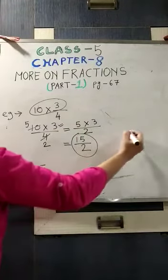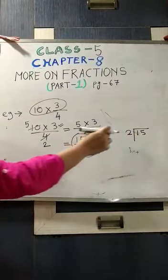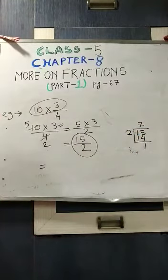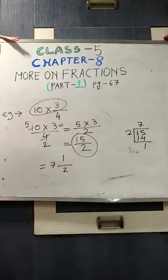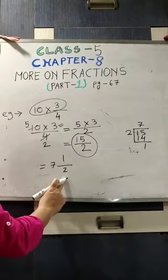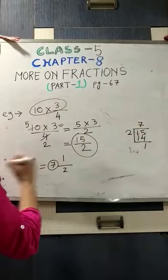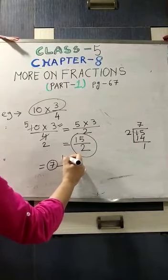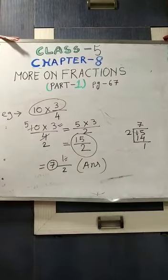You know how we do that? We do the division. This division you will do in the rough. The denominator remains the same, quotient becomes the whole number, and the remainder comes as numerator. Your answer is 7 whole 1/2.